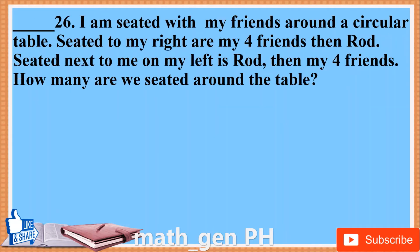Number 26. I am seated with my friends around a circular table. Seated to my right are my 4 friends then Rod. Seated next to me on my left is Rod, then my 4 friends. How many are we seated around the table?